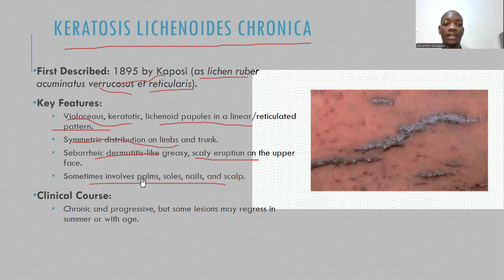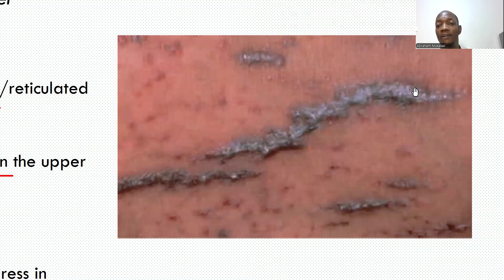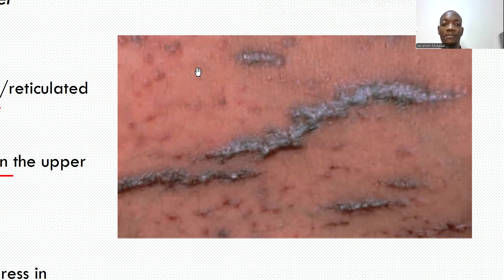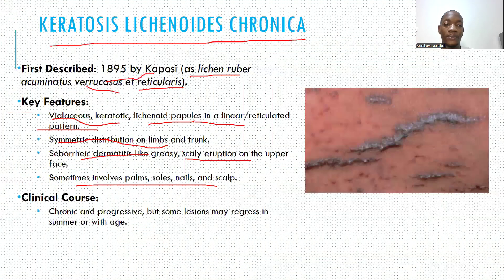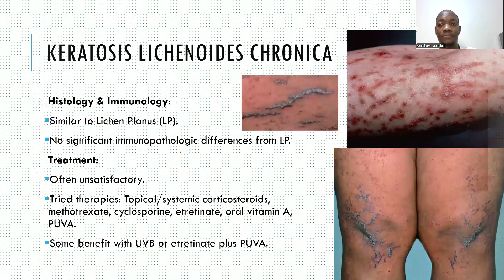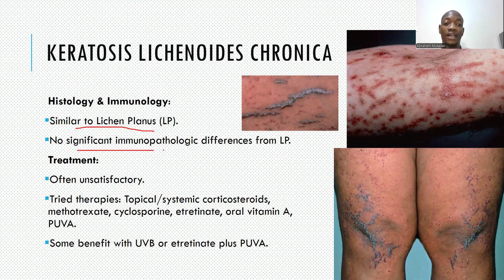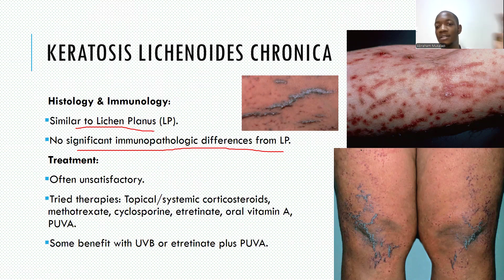As you can see in this picture, there are these linear verrucous lichenoid plaques with a reticulate pattern — reticulate meaning a net-like pattern. On histology, it will be similar to lichen planus, with no significant immunological differences from lichen planus. That is why some people think it may also be a variant of lichen planus.